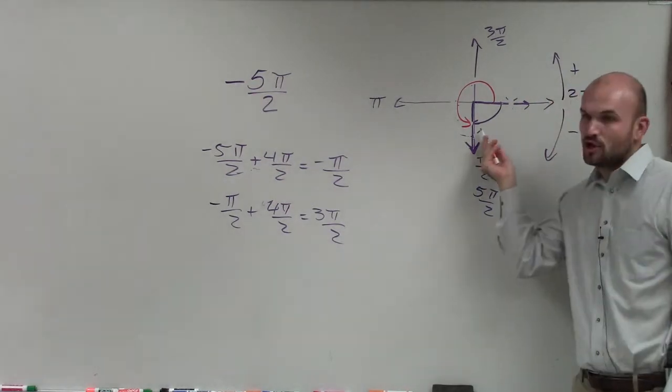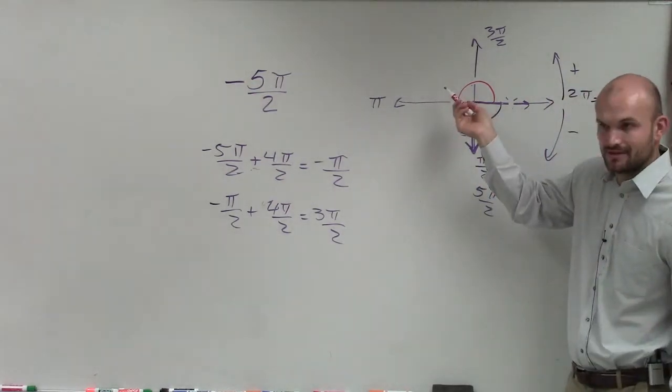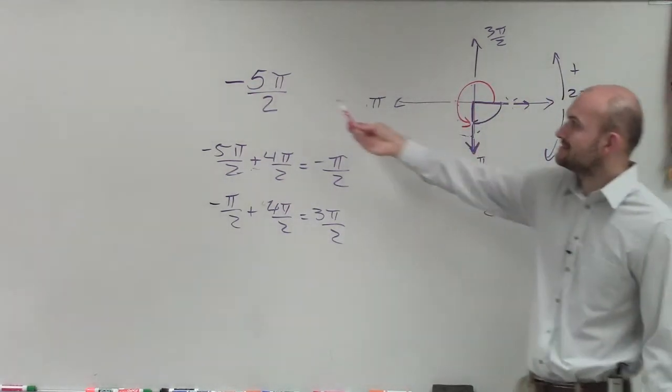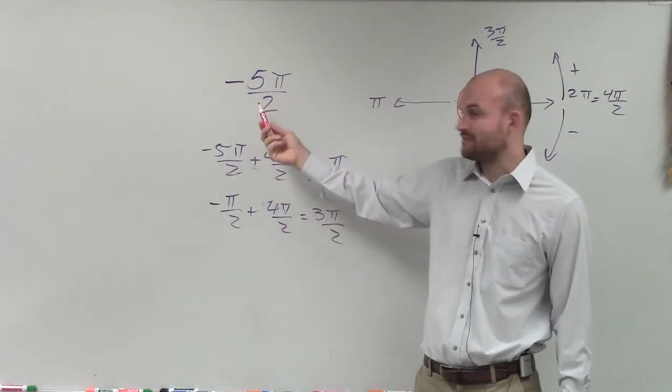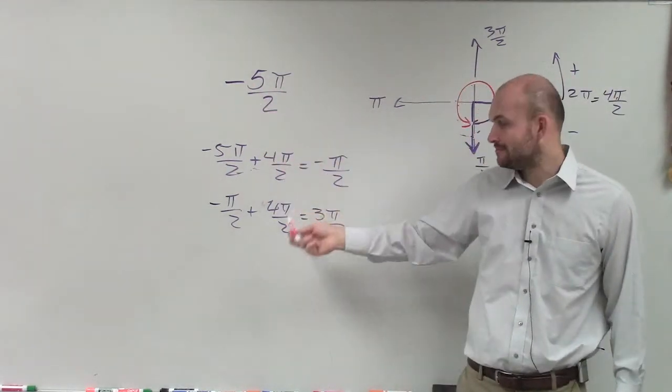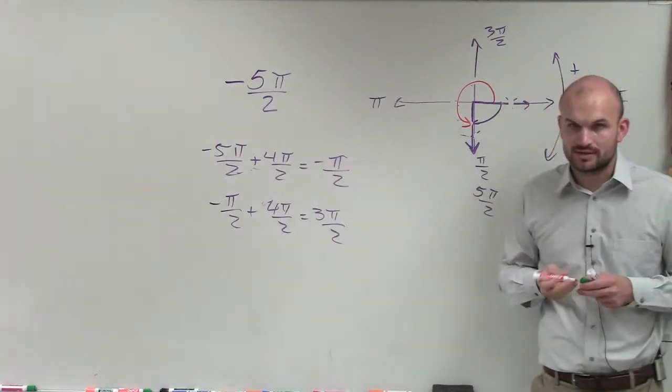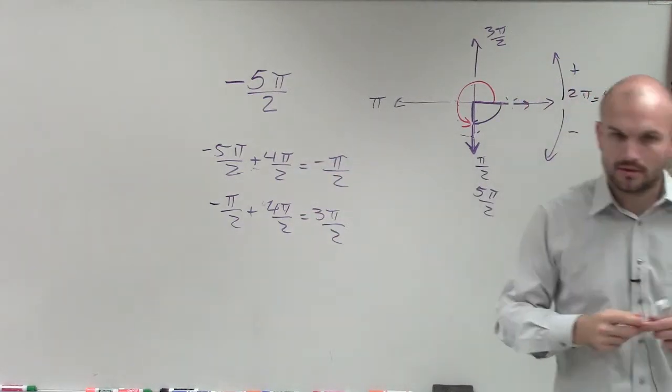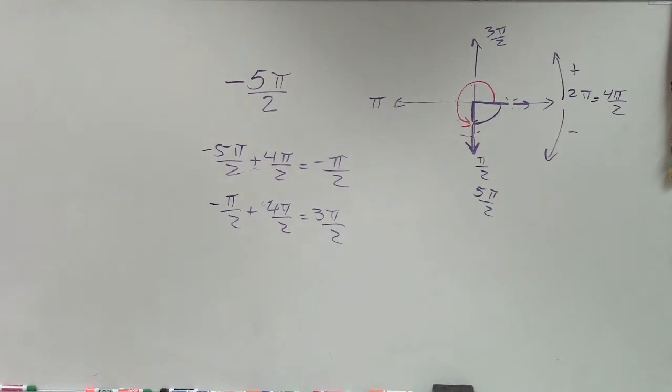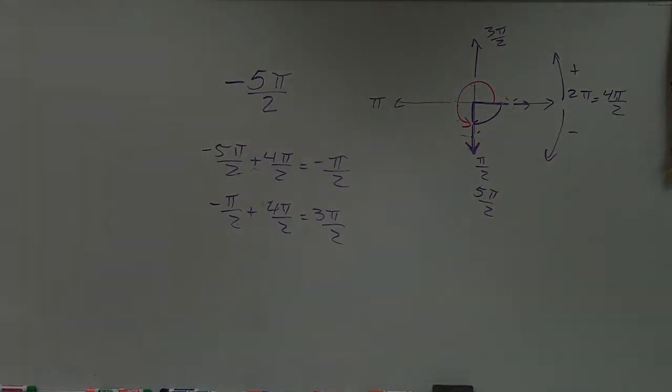So that's the smallest negative and the smallest positive. In this case, since I had an angle that was larger than a revolution, I had to add 4π over 2 twice. Make sense? So, would you like me to go over one that just has to add and subtract?